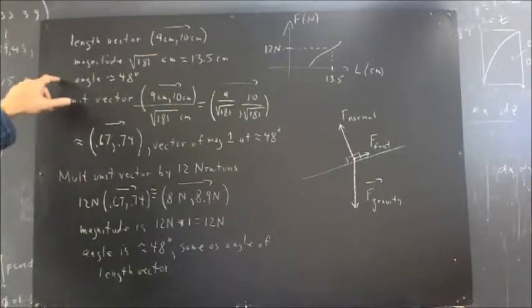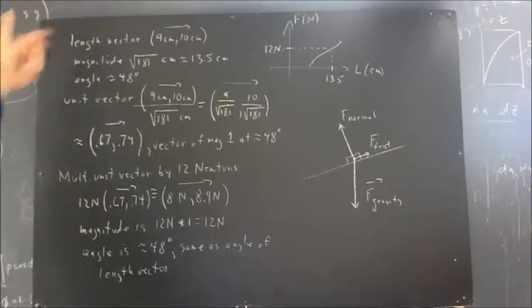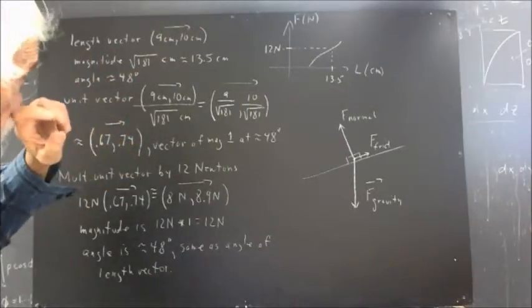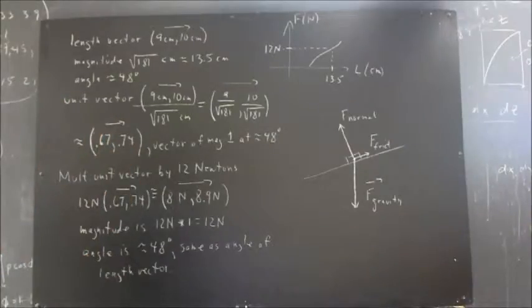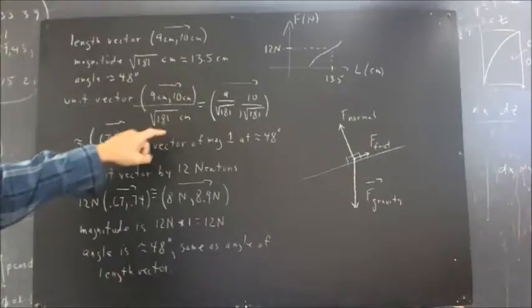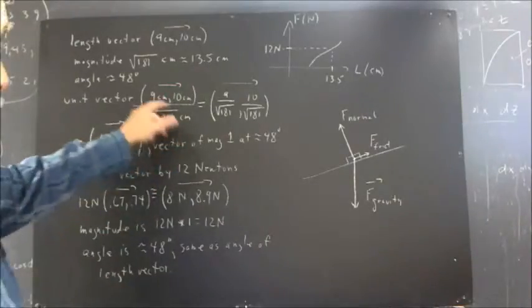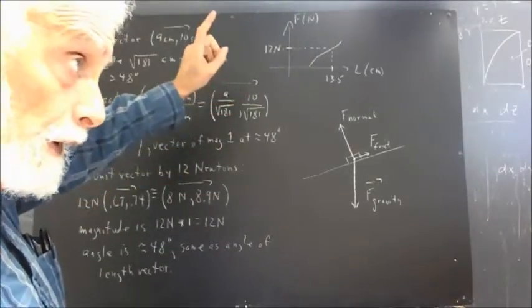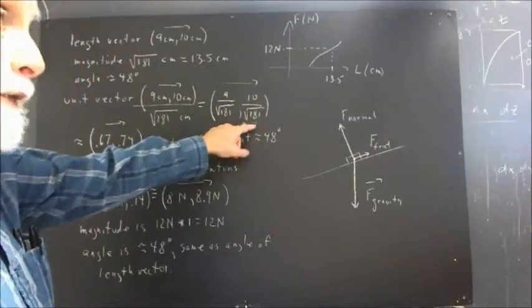And we get a unit vector now by dividing the length vector by its magnitude. Any vector we divide by its magnitude gives us a vector of magnitude 1 in the same direction. So we divide this vector by the square root of 181 centimeters, and the centimeters divide out. We get the vector 9 over the square root of 181, 10 over the square root of 181. That is the unit vector.